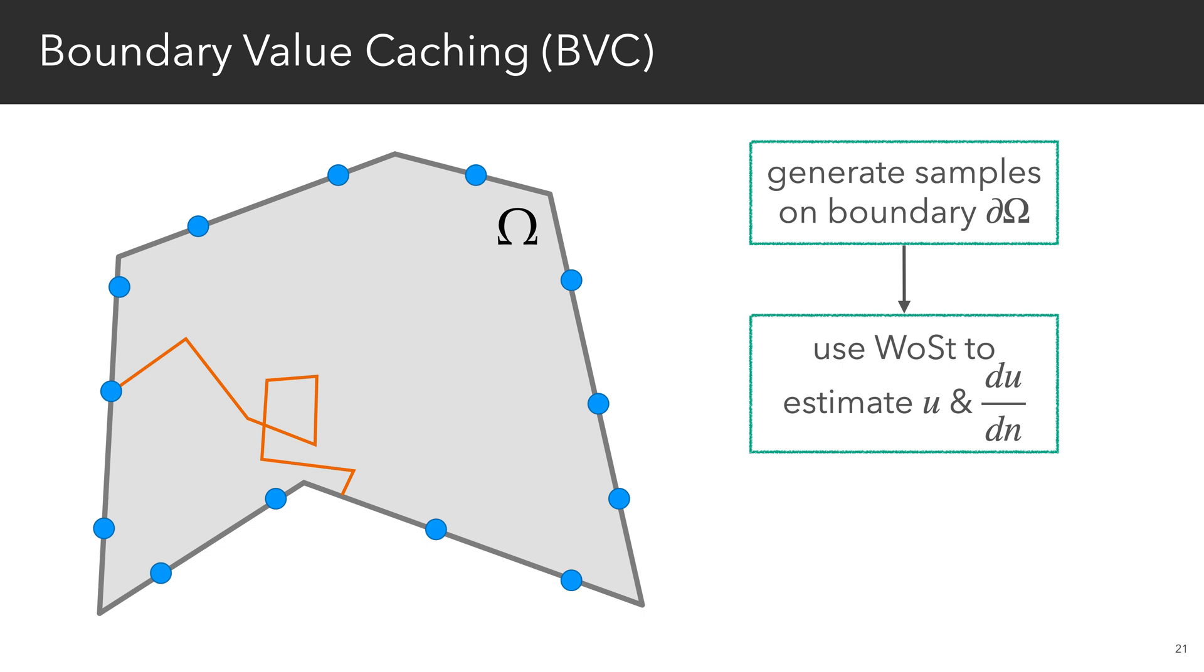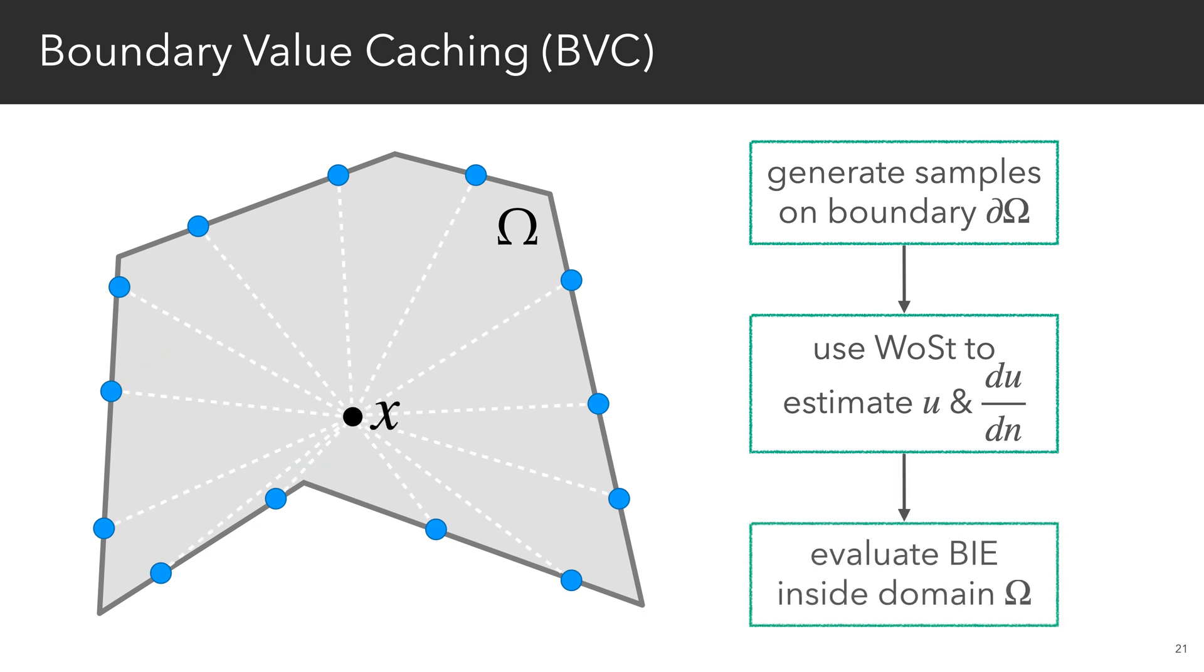Then, we compute the kernels for each evaluation point, and update a running estimate of the solution at each point. And then we simply repeat until convergence.